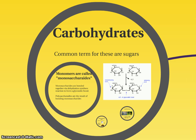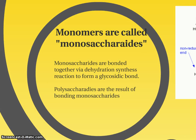First, I'm going to focus on carbohydrates. Everybody knows these as sugars. They are made of monomers — mono means one. These are made of single units called monosaccharides. Monosaccharides get bonded together. If you get two monosaccharides together, it's called a disaccharide. If you get more than two monosaccharides bonded together, they're called polysaccharides.